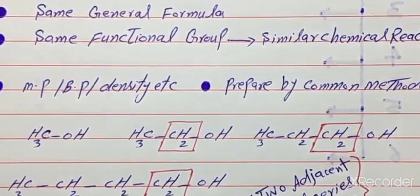You have to remember this point: in a homologous series, if these molecules have the same functional group — functional group means hydroxyl group — same functional group means chemical reactions are also the same, like boiling point, melting point, density — these are same. But they are structurally arranged in a different manner. That is why it is known as a homologous series.